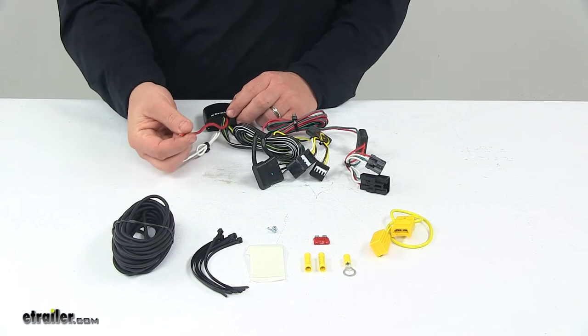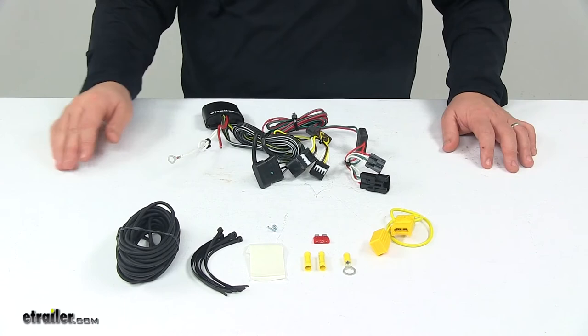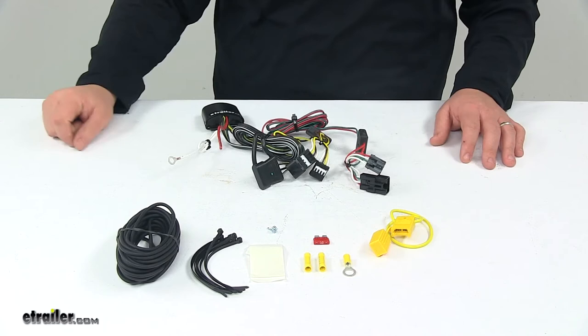Next, you'll need to run the hot lead to the vehicle battery. That's the red wire coming out of the box. This gets connected to one end of the bundle of wiring with one of the included butt connectors. The other end of the bundle runs to the vehicle battery, gets another butt connector attached to it, and connects to one half of the fuse holder.